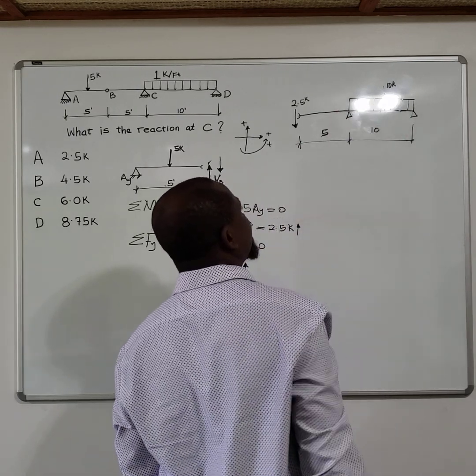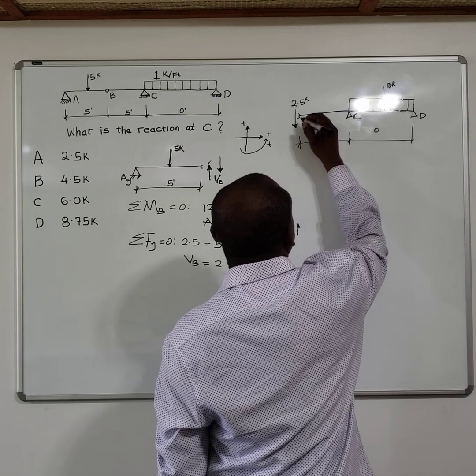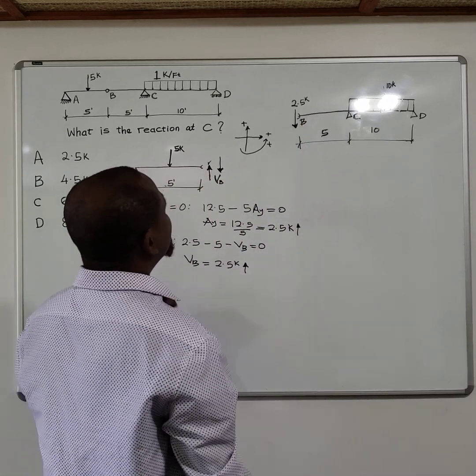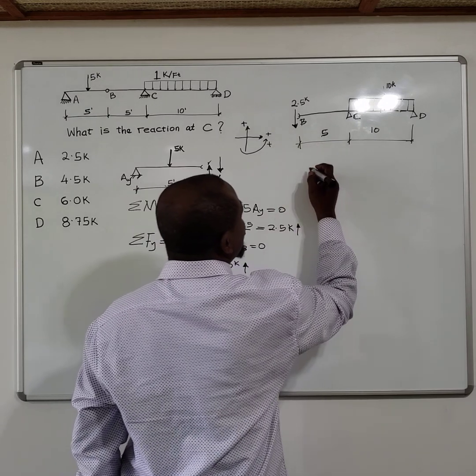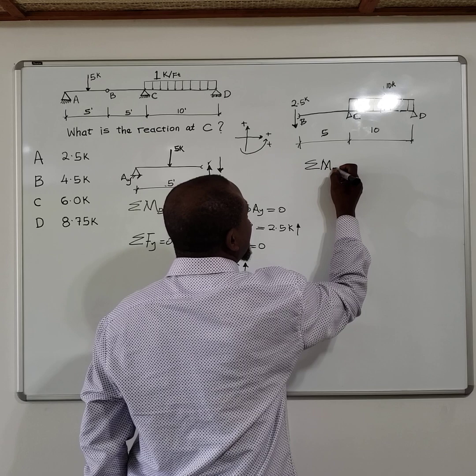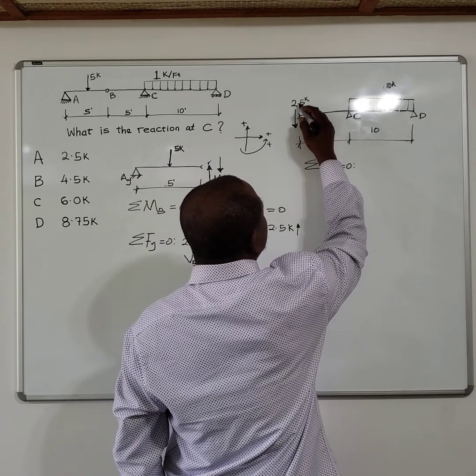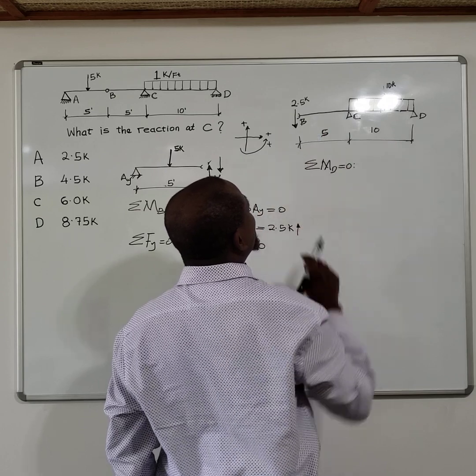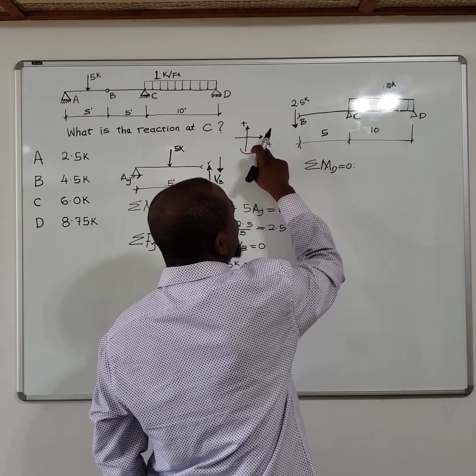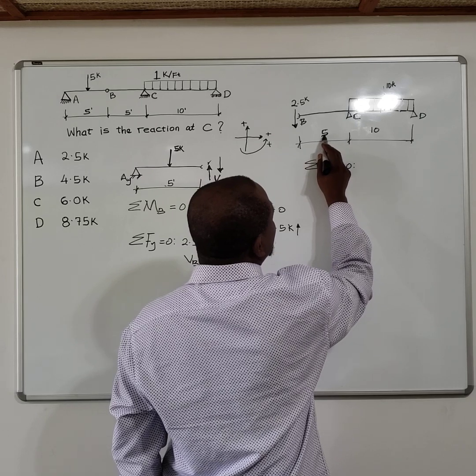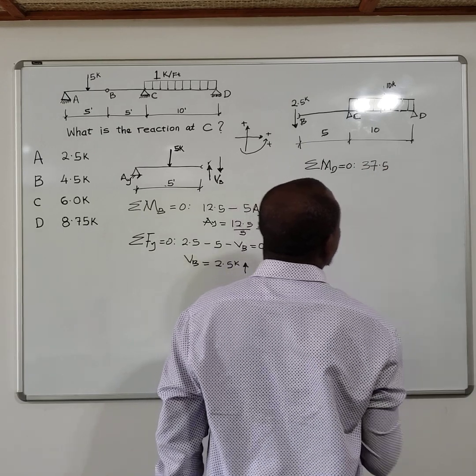To simplify this, you could just take a moment about point D. You already know the reaction at point B, so the sum of the moment at D will be zero. This 2.5 will be creating a counterclockwise rotation about point D, and based on our orientation that will mean a positive moment. So 2.5 multiplied by 5 plus 10, that's 15, that gives you 37.5.